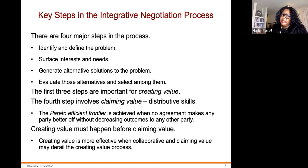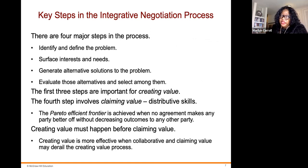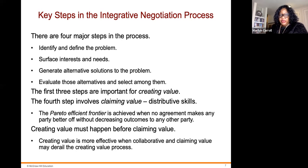In integrative negotiations, outcomes are measured by the degree they meet both negotiators' goals. The four major steps in the process include identifying and defining the problem, surfacing interests and needs, generating alternative solutions, and evaluating and selecting from among them. The first three steps are important for creating value; the fourth step involves claiming value — distributive skills. The Pareto Effect frontier is achieved when no agreement makes any party better off without decreasing outcomes of any other party. Creating value must happen before claiming value — you can't claim something that's not there yet.